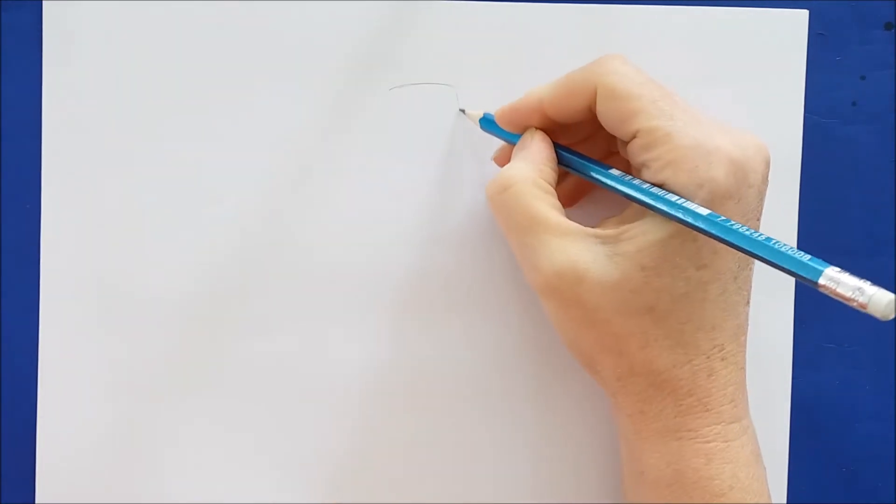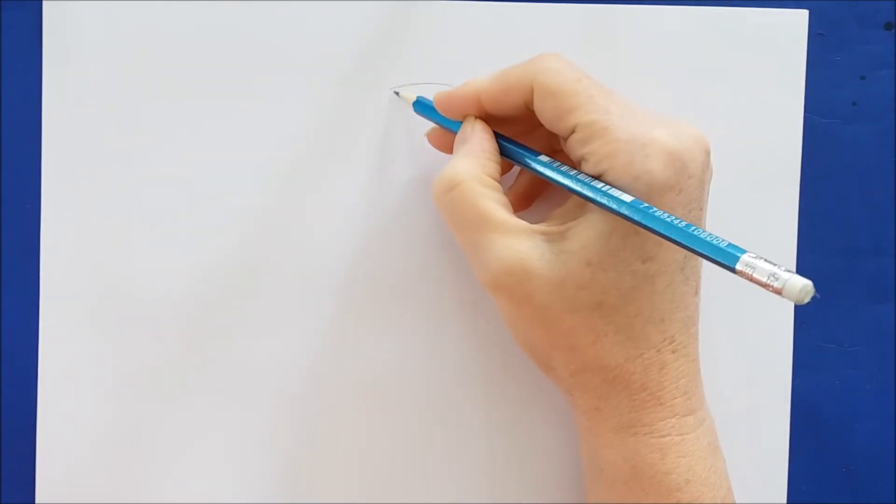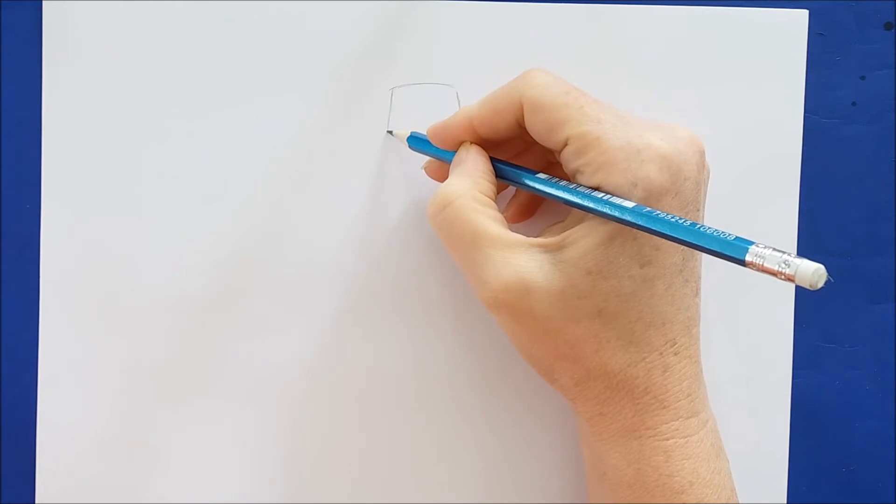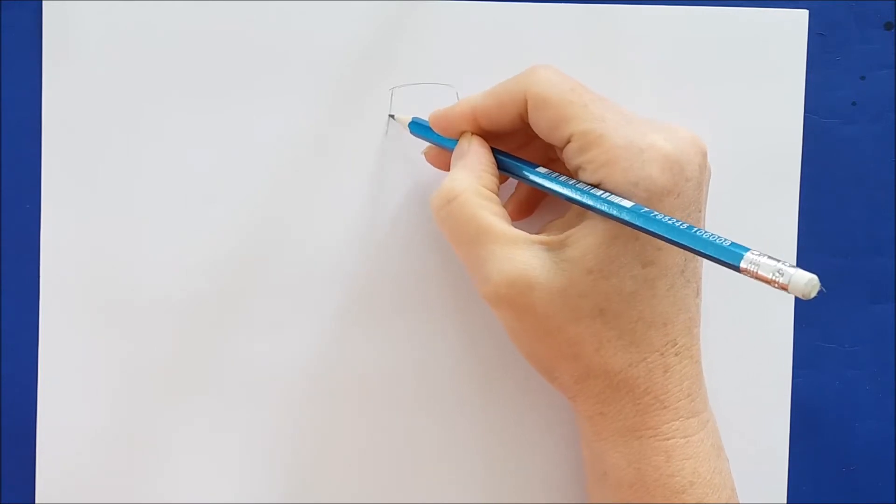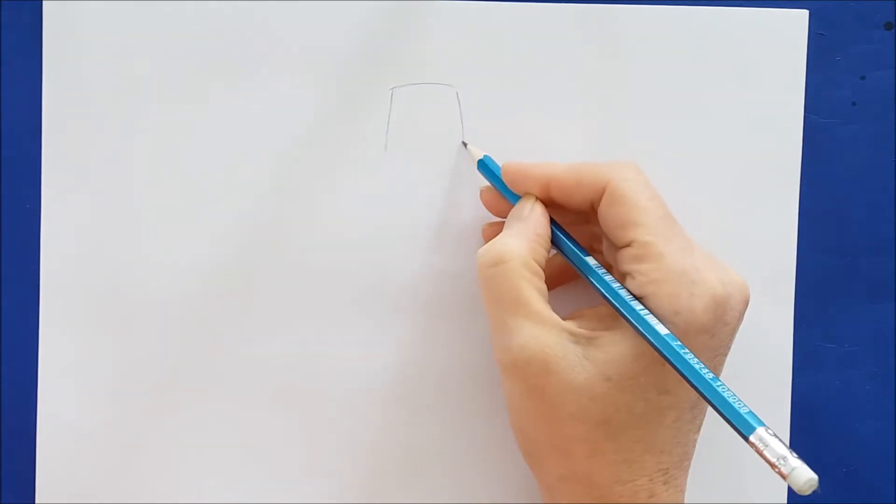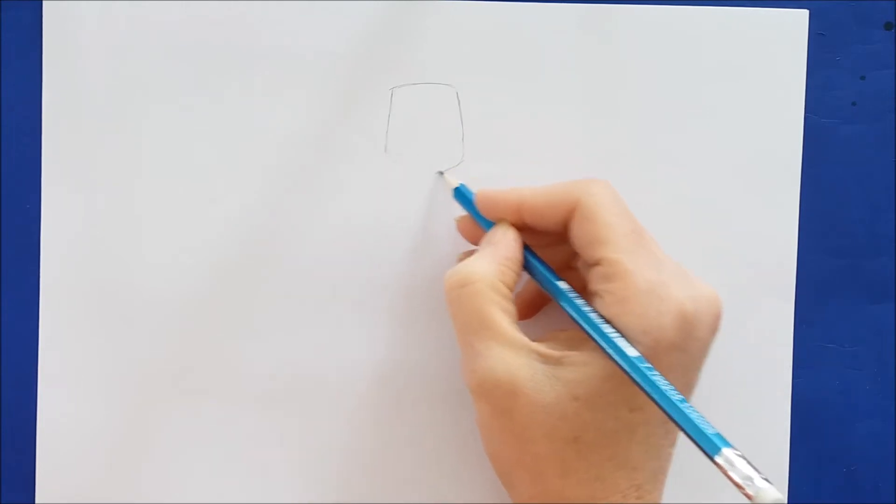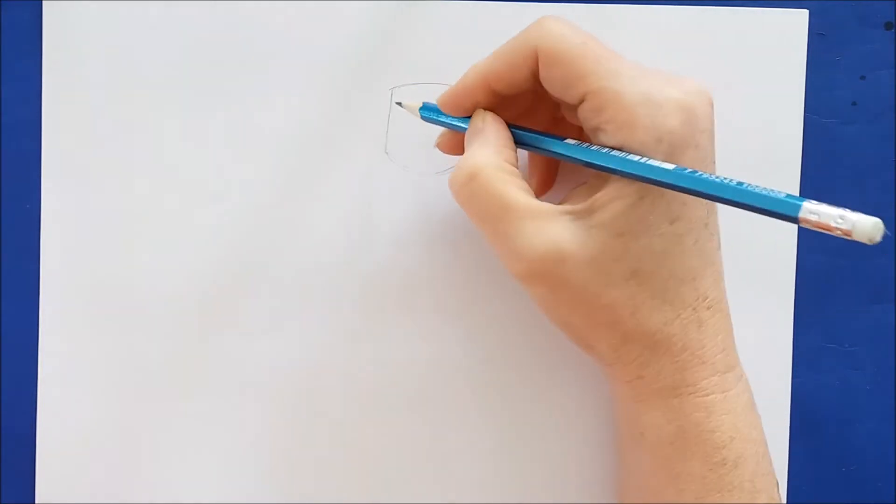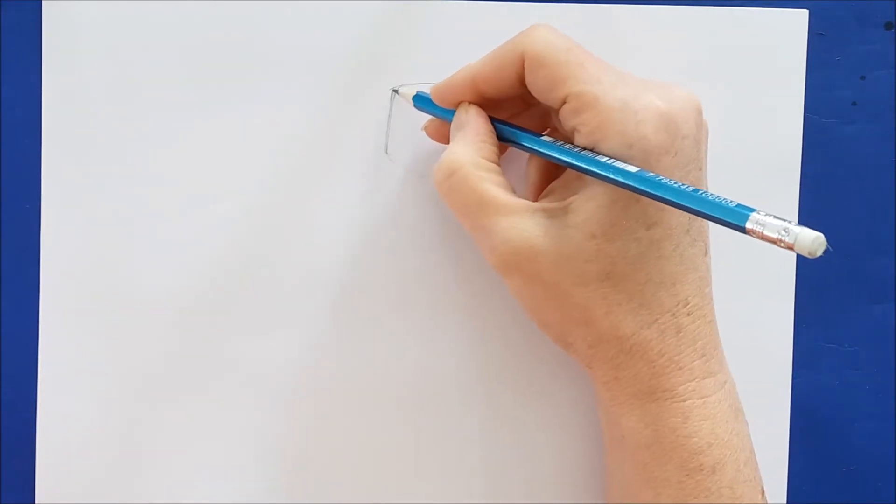I'm going to begin the knight by drawing a curved line here at the top of my piece of paper. Then I'm drawing two lines down from that that angle out just a slight bit, and I'm going to connect those two lines with a rounded line right here.